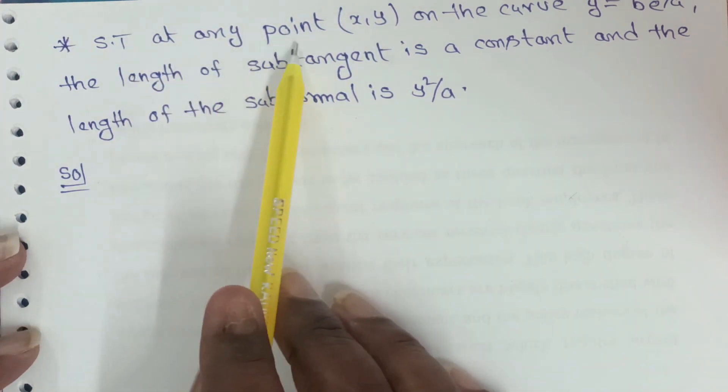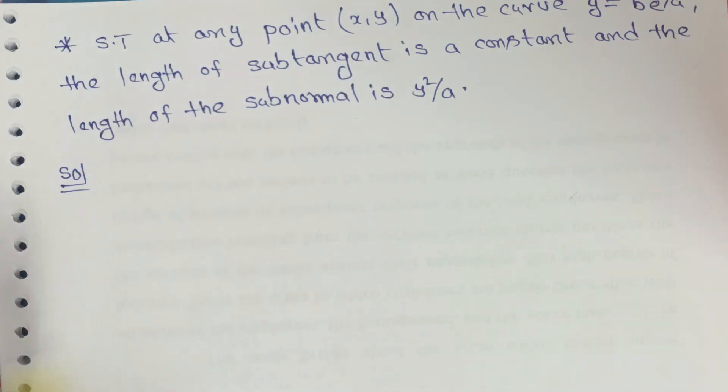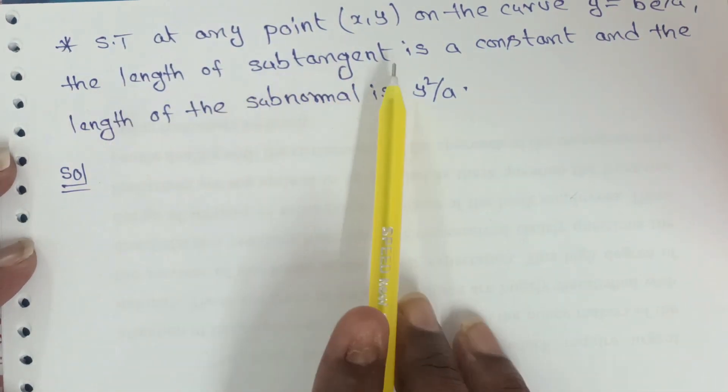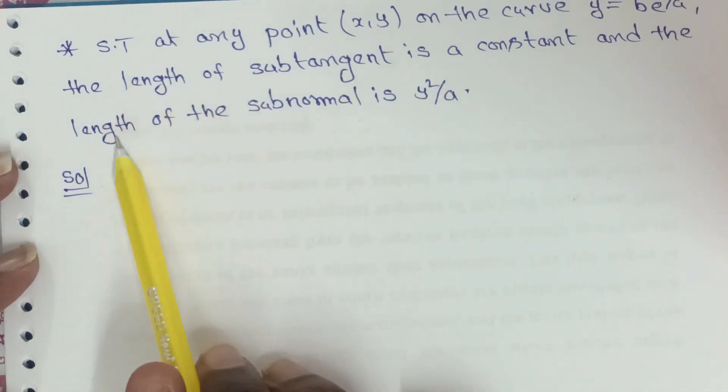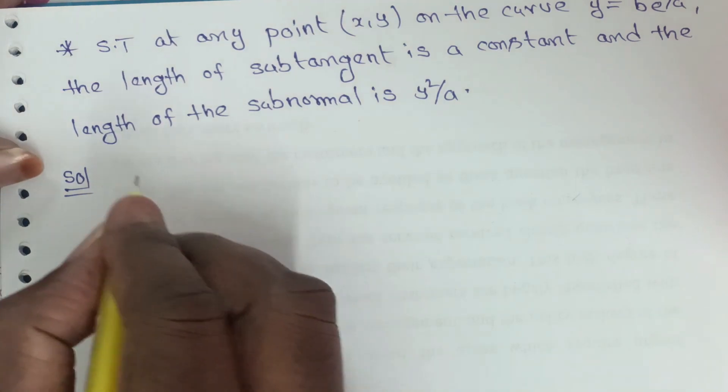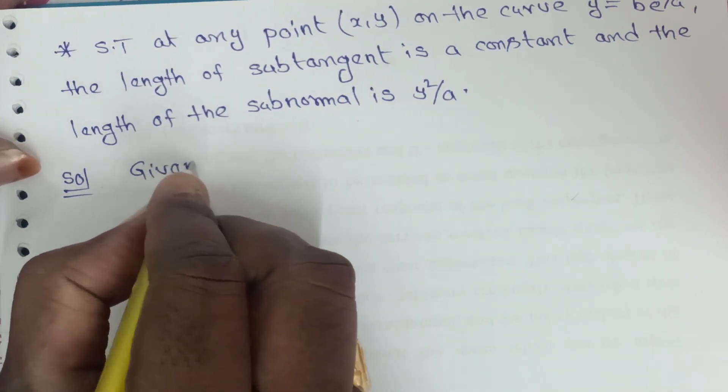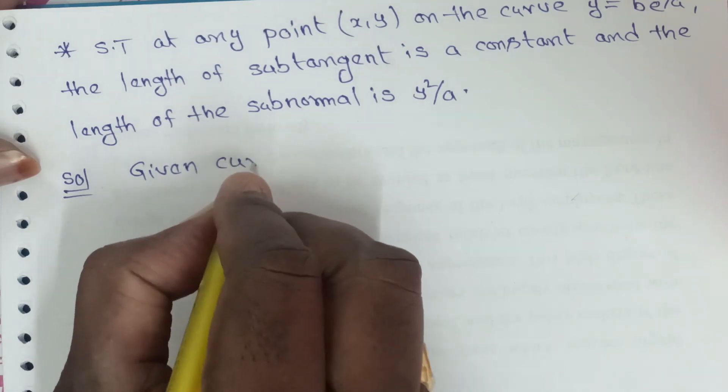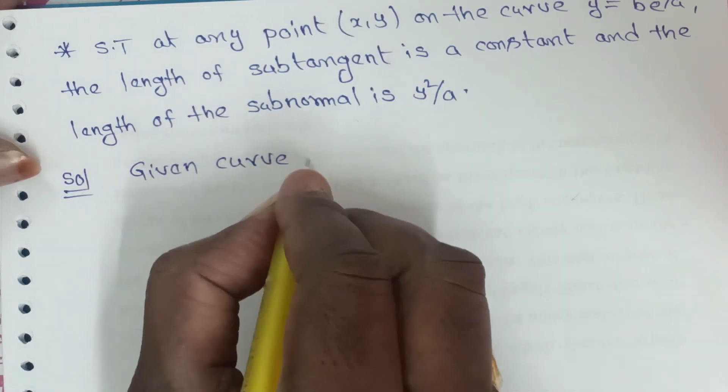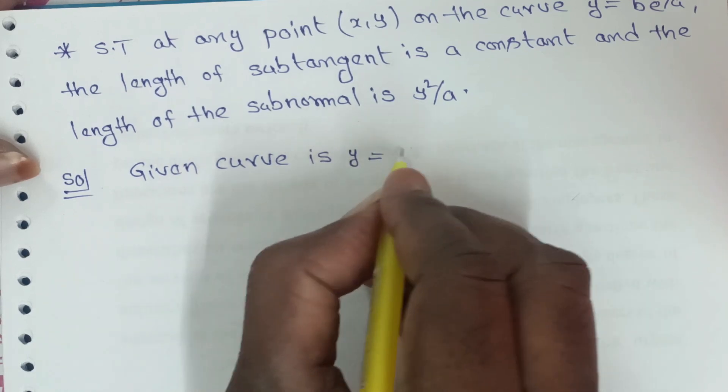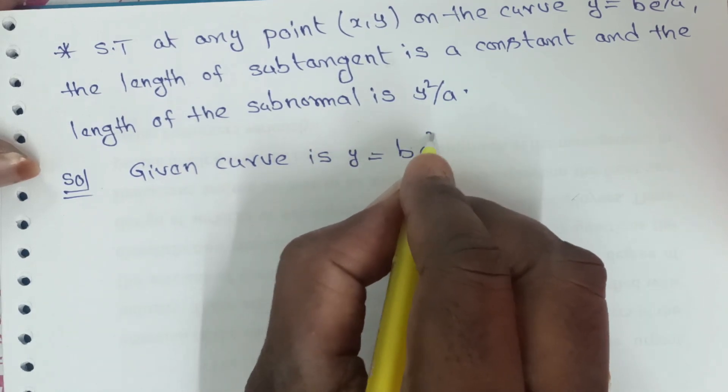The problem states: at any point (x, y) on the curve y = b*e^(x/a), the length of subtangent is constant and the length of the subnormal is y²/a. The given curve is y = b*e^(x/a).